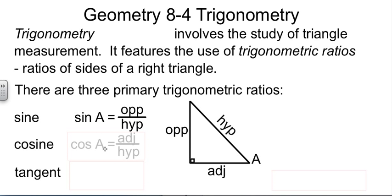Cosine of A, abbreviated cos but pronounced cosine, is the adjacent leg over the hypotenuse. Tangent, abbreviated tan but pronounced tangent, is opposite leg over adjacent leg.